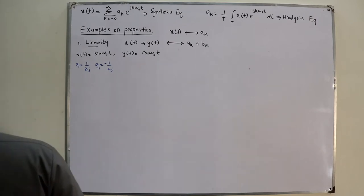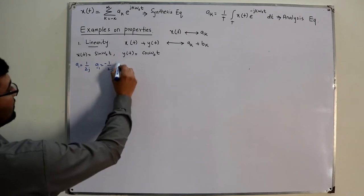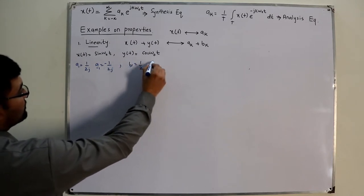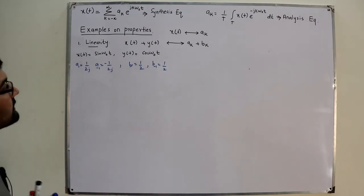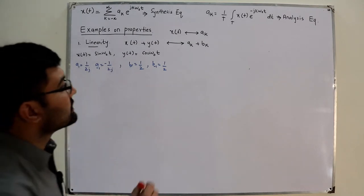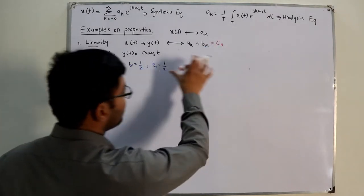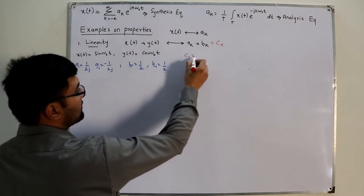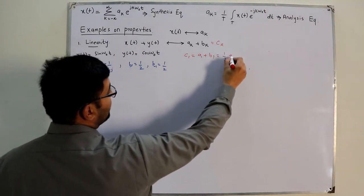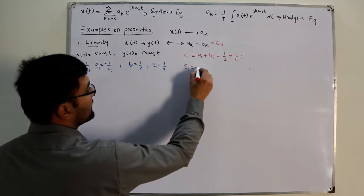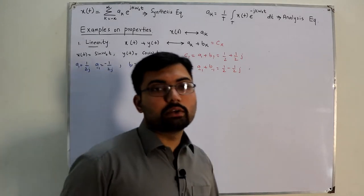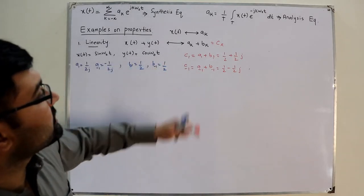For cosine, b₁ = 1/2 and b₋₁ = 1/2. These are the only two Fourier coefficients for these functions. So we add the corresponding ones: c₁ = a₁ + b₁ = 1/2 + 1/(2j), and c₋₁ = a₋₁ + b₋₁ = 1/2 - 1/(2j). The property has saved us a lot of time.